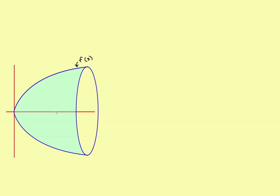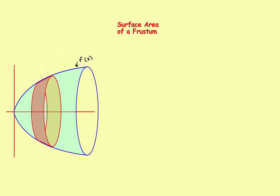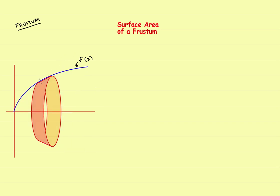What we'll do is divide this thing up into a series of little shapes called frustums. Let's take a look at what a frustum is. A frustum is a section of a right circular cone — it looks like this. There is a formula from geometry for the surface area of a frustum, so let's take a look at that. We'll remove the blue part so we can concentrate on the frustum itself.